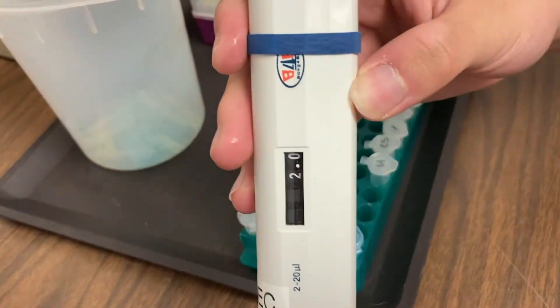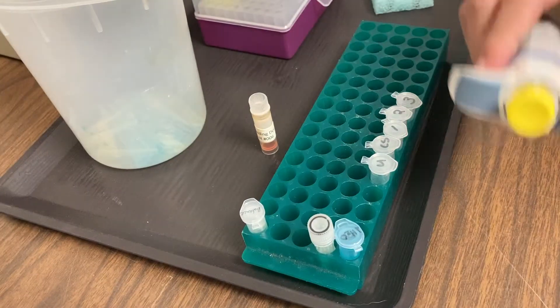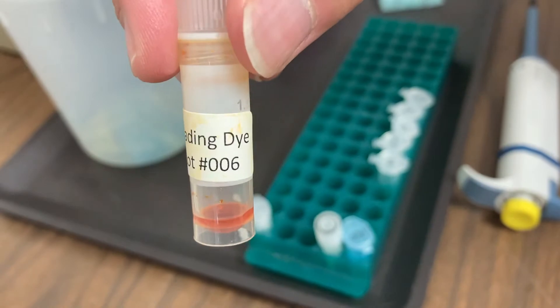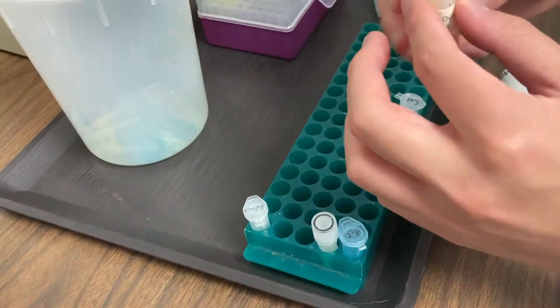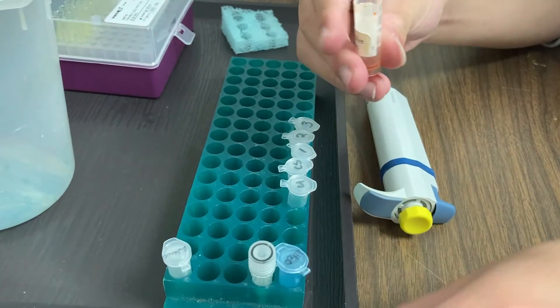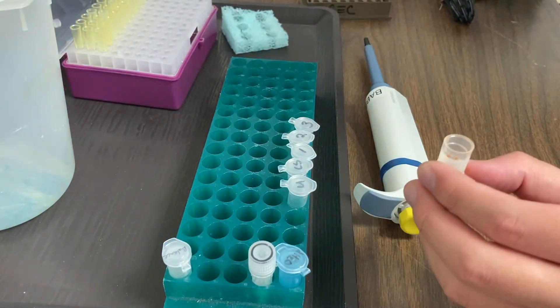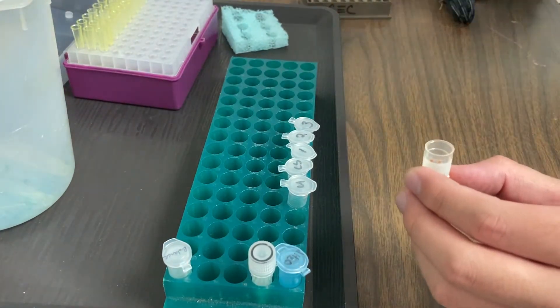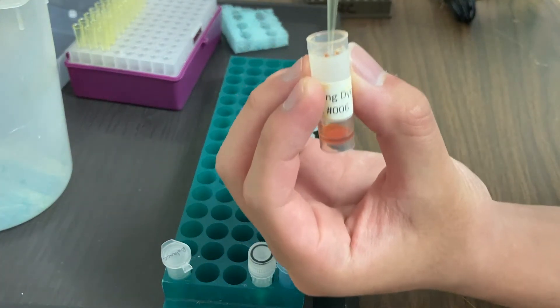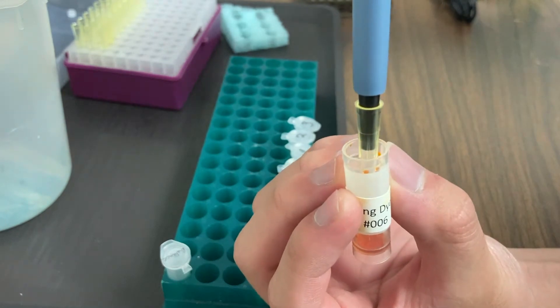We're going to set our micropipette to two microliters, and we're going to add something called loading dye. What the loading dye does is it mixes with the DNA, and it's very dense, and so when we add it to our agarose gel or the buffer above the gel, the DNA will then fall to the bottom. So let's go ahead and add our loading dye.